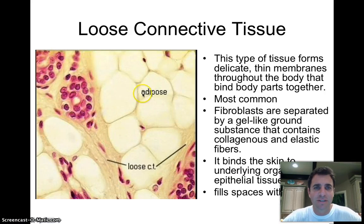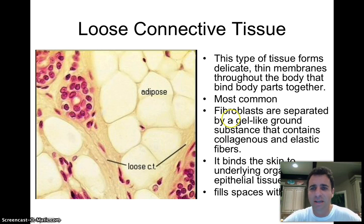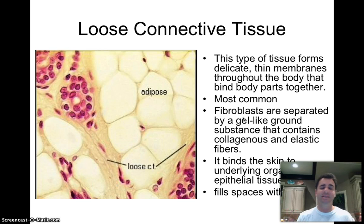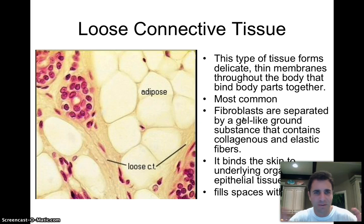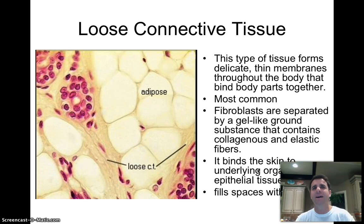Now we're on loose connective tissue, which is very delicate. It holds organs and structures together and also comes from fibroblasts, which are distantly spaced. There's lots of gel-like ground substance in between, filled with collagen and elastic fibers. These fibroblasts make the collagen and elastic fibers that hold the different parts of the body together — the organs — and it even binds your skin to the underlying organs, as in the epithelial tissues inside the mouth and the skin itself to the organs underneath.